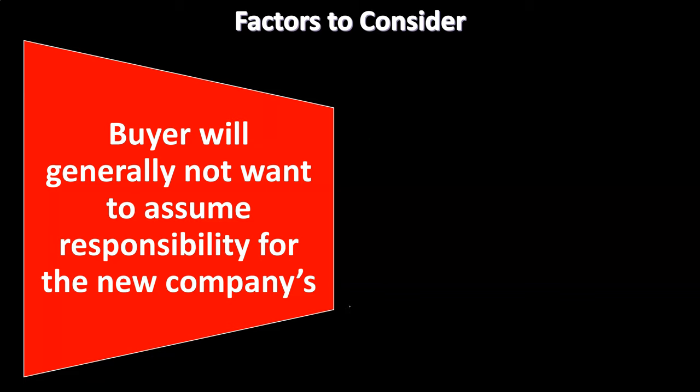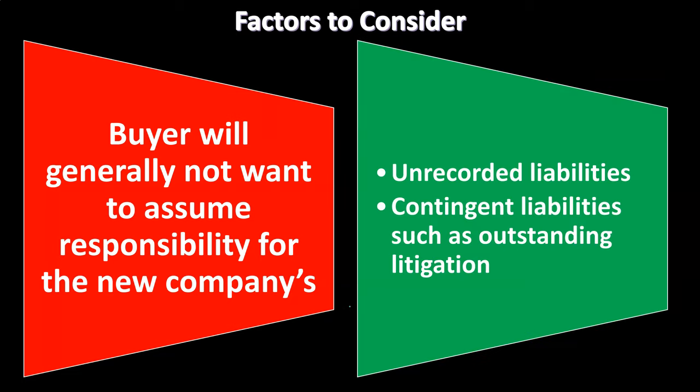A key factor to consider is that the buyer will generally not want to assume responsibility for the new company's unrecorded liabilities or contingent liabilities, such as outstanding litigation. One company might like the other's assets but not want to take on a contract they can't get out of, or a lawsuit hanging over their head. This is part of the merger structure consideration — how to set up the deal so the acquiring company doesn't take on unwanted obligations, which influences how the consolidation is structured.